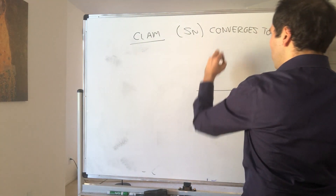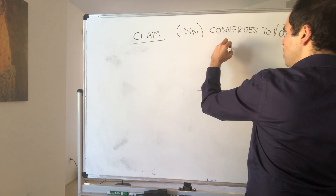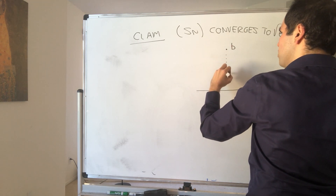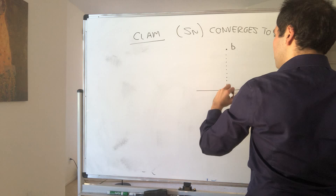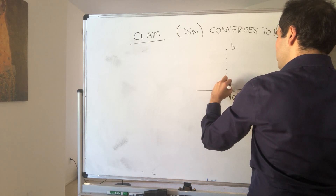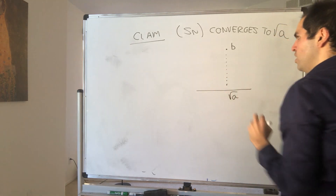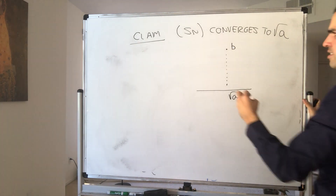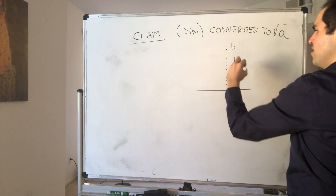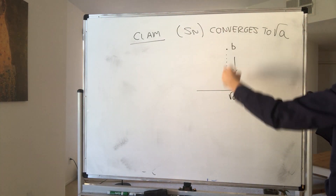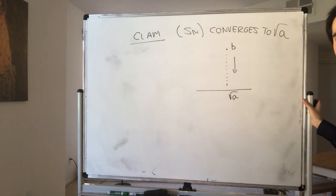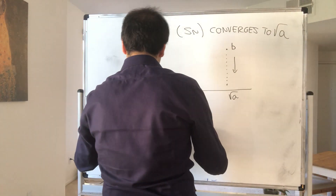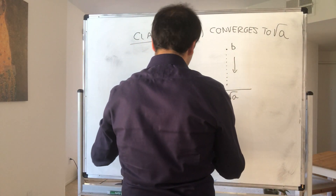So what do we want to show? We started with some number b, and eventually our terms got smaller and smaller. We want to use the Monotone Sequence Theorem, which says in this case: if a sequence is decreasing and bounded below, then it converges.